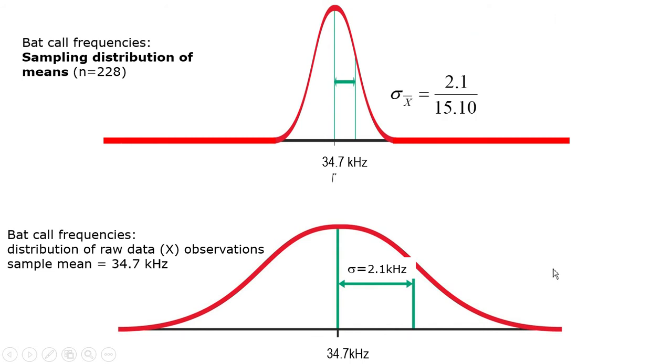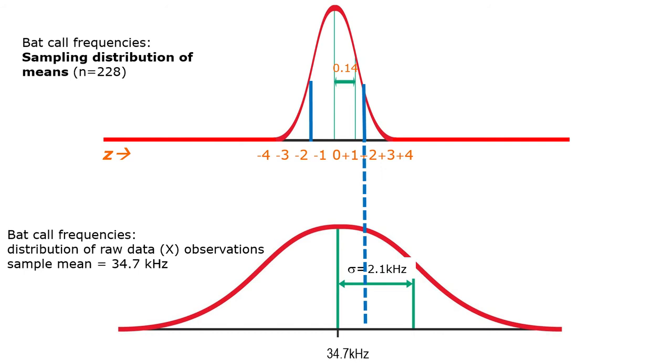The standard deviation of this distribution is 0.14. So we got that by taking our estimated population standard deviation, dividing it by the square root of the sample size, n equals 228. So within that, we find that this is our confidence interval right here. The upper limit is 34.7 plus 1.65 times 0.14, so 1.65 standard errors. The lower limit is 34.7 minus 1.65 standard errors.